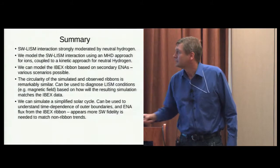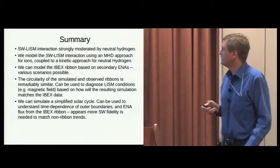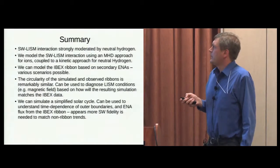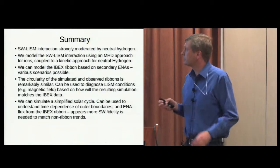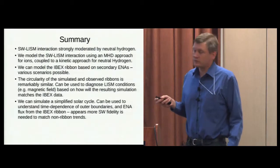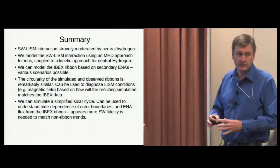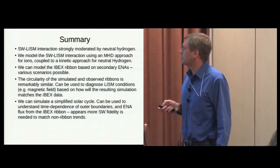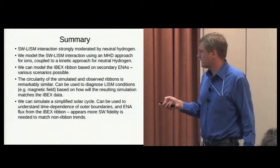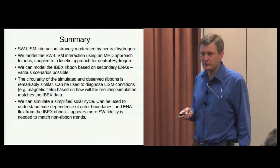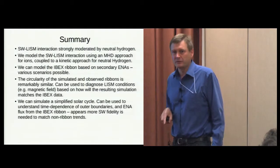In summary: the solar wind–interstellar medium interaction is strongly moderated by neutral atoms, neutral hydrogen in particular. We use MHD for the ions and a particle code for the hydrogen, coupled together. We can look at the IBEX ribbon from the data and from our simulations to see what type of conditions give us the best match. We've also looked at a time-dependent calculation where we model the solar cycle — some results are promising, but some suggest that our complexity still isn't sufficient to explain all the data.